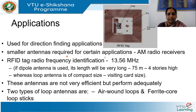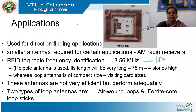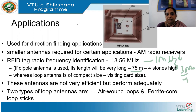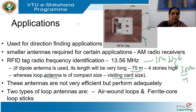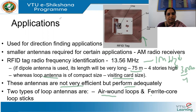Loop antennas use smaller sizes, especially for AM radio receivers. An example is the RFID tag working at 13.56 MHz. If you used a dipole antenna at 1 MHz, λ/4 would be about 75 meters — equivalent to a 4-story building. Whereas with a loop antenna, it is the size of a visiting card with multi-turn loops. Though not very efficient, they perform adequately because of their small size, and can have air cores or ferrite core loop sticks for better performance.